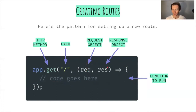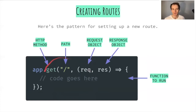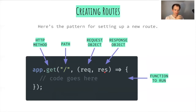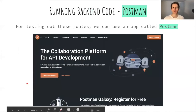The request object gives us lots of meta information about the incoming request — if there's extra data we need like an ID of a resource, or an object being created, we find it there. The response object is what we use to trigger responses back to the client. Finally, the code inside the callback is what actually runs every time someone makes a request to this particular route.